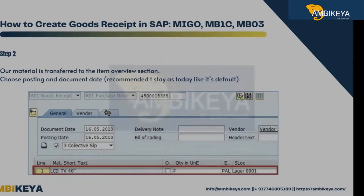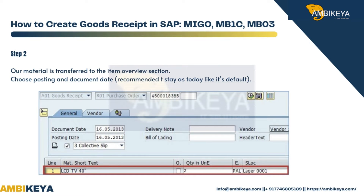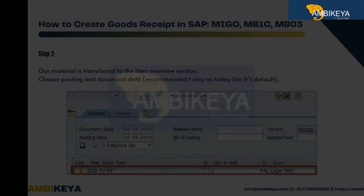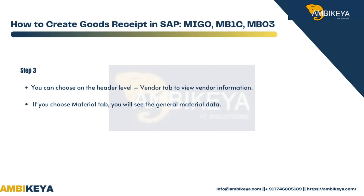Step 2: your material is transferred to the item overview section. Choose the posting date and document date — it is recommended to keep these as today, which is the default. Step 3: on the header level, you can choose the Vendor tab to view vendor information, or the Material tab to see general material data.